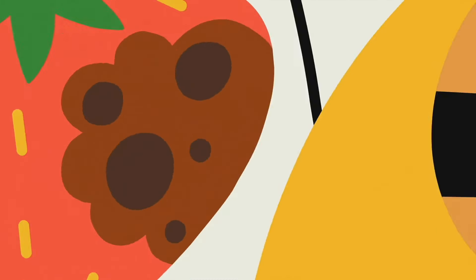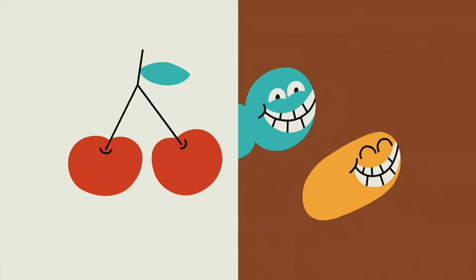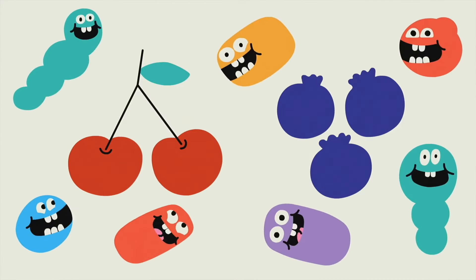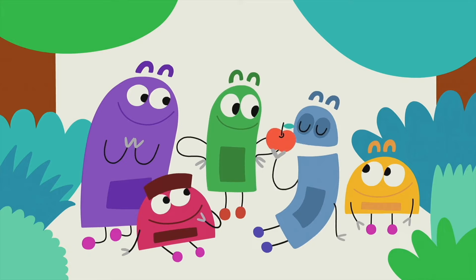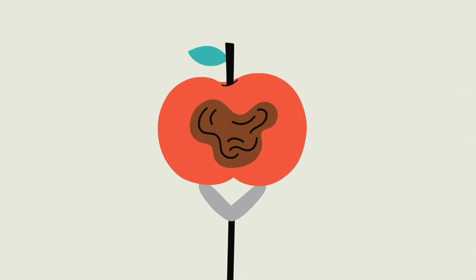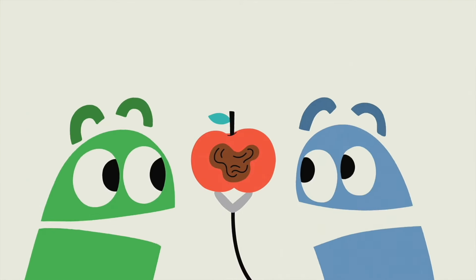Those itty-bitty critters just eat, eat, eat through a cherry or a berry, and it's totally sweet! It's a natural process, it happens a lot. It's called decomposition, in other words, rot.